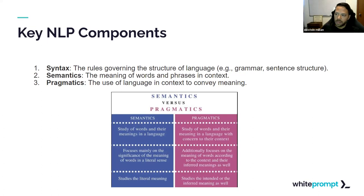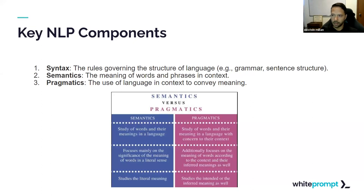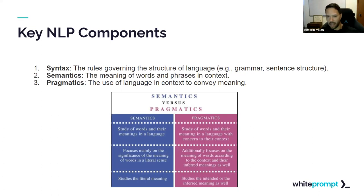Semantics refers to the meaning of words and phrases in context. For example, in Spanish, there are words that have the same sound but portray different context and meaning. Semantics deals with that, allowing sentiment analysis models to know the difference between sarcasm — which is one of the most difficult parts of NLP — and actual meaning. Differentiating sarcastic meaning from literal meaning is handled through semantics.